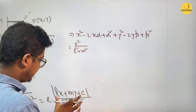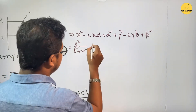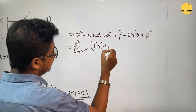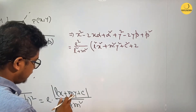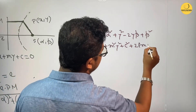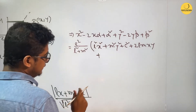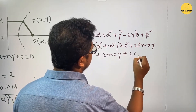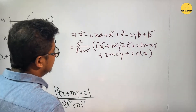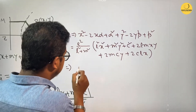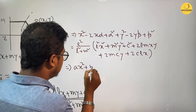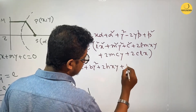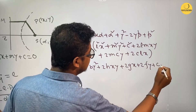Expanding further: squared minus 2x·alpha squared plus b plus c squared plus d squared, plus C squared plus 2AB, plus 2LMxy plus 2BCy, plus 2LCx — equal to x squared plus y squared plus 2Hxy plus 2Gx plus 2Fy plus C equal to 0.